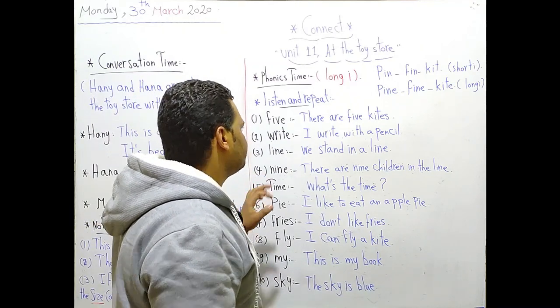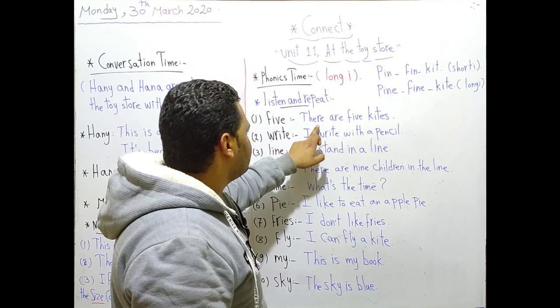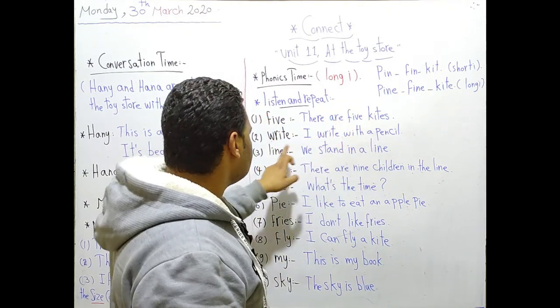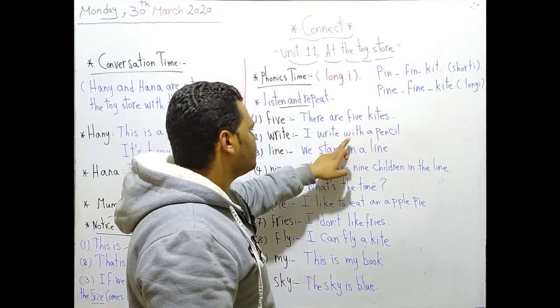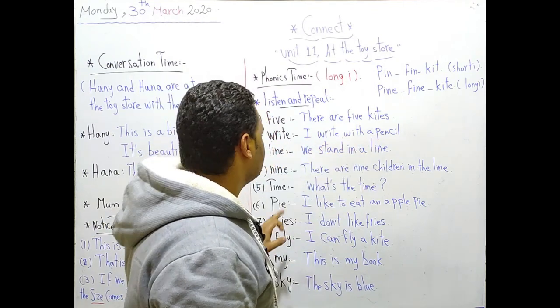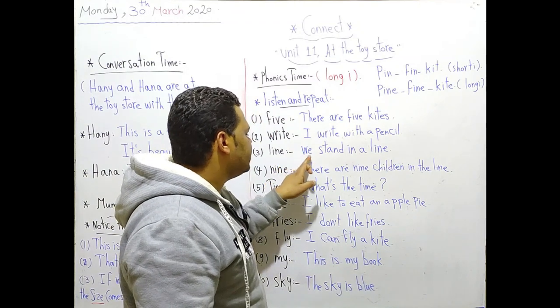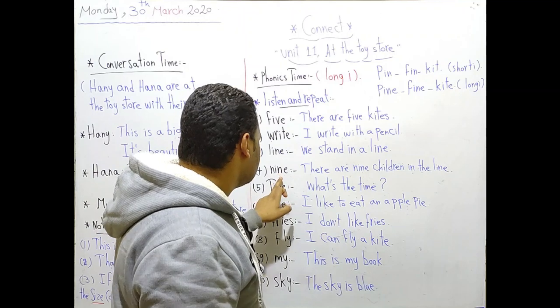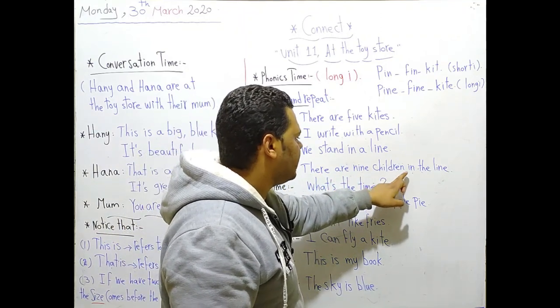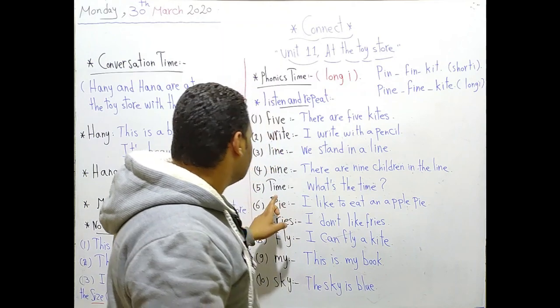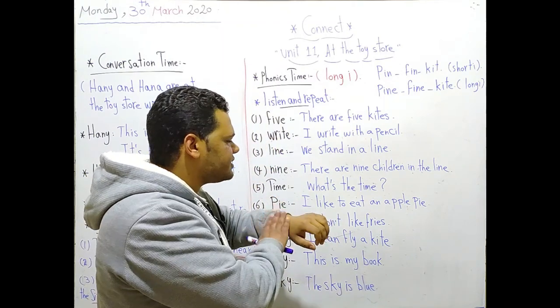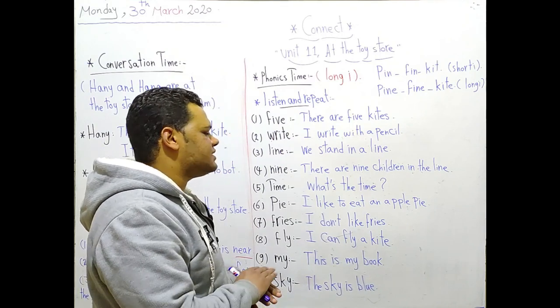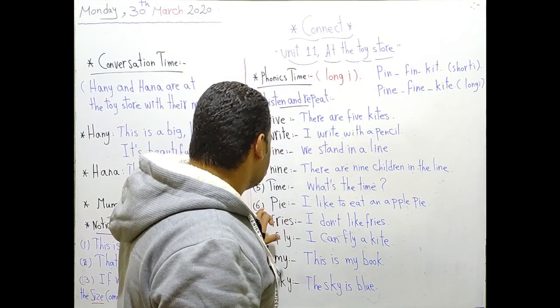Now it's time to make some sentences. As you have learned it before. Number one: there are five kites. Number two: I write with a pencil. Number three: we stand in a line. Number four: there are nine children in the line. Number five: what's the time. If you want to ask about the time, you will say what's the time.